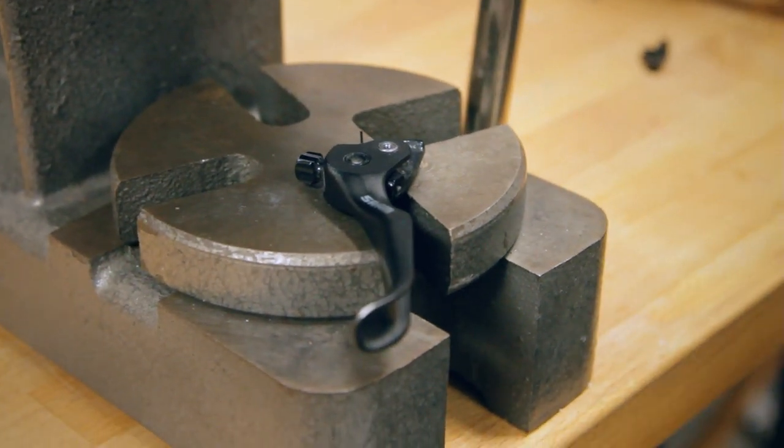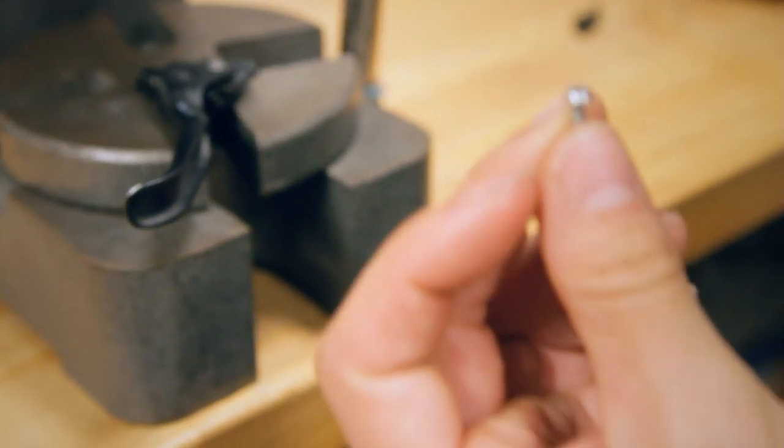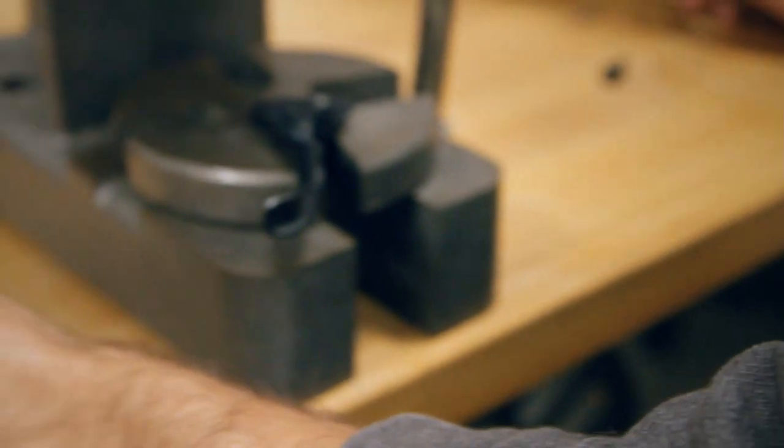First thing you do is unbolt the lever blade from the lever assembly. There are these two little bolts, small torques, take them out, pop your lever out.